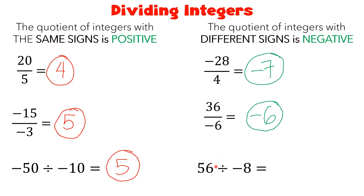And for the last one: 56 divided by negative 8. So they have different signs. 56 divided by 8 is equal to 7. Then just copy the negative sign, so we got negative 7.